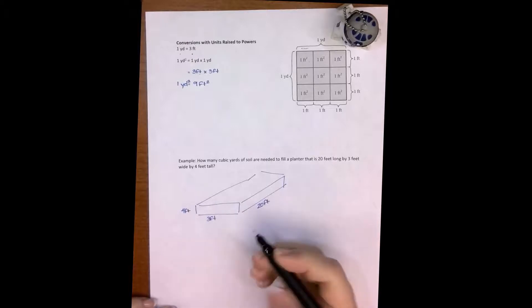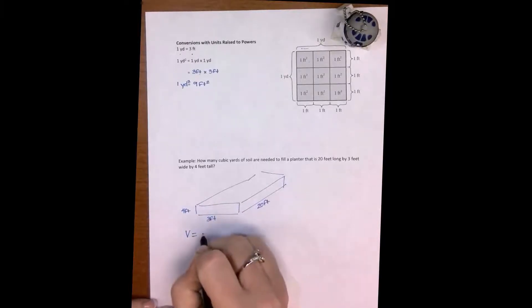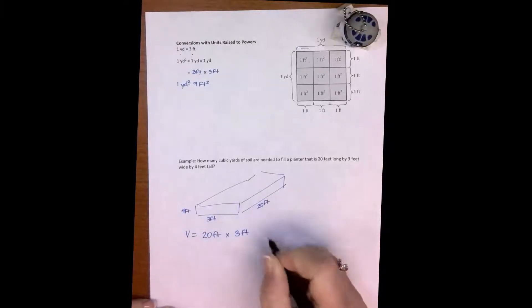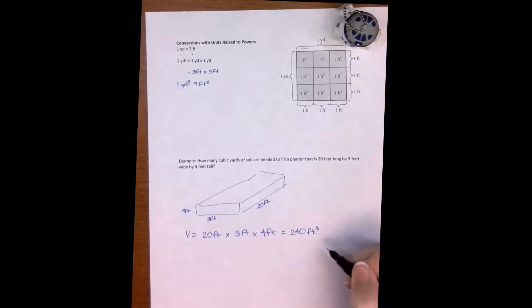So volume is going to be length times width times height. So that's going to be equal to 20 times 3 is 60, so 240 cubic feet.